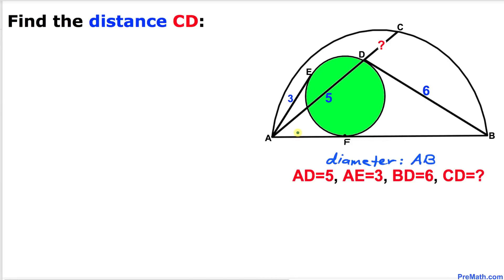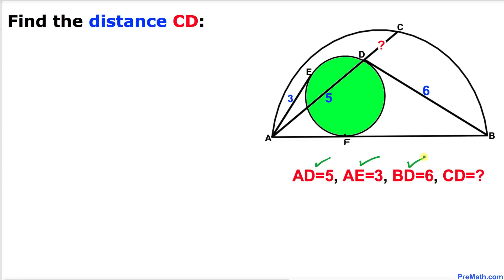Welcome to PreMath. In this video tutorial we have a semicircle with diameter AB, along with a green circle that is tangent to this semicircle at point F. The line segment AD is 5 units, line segment AE is 3 units, line segment BD is 6 units, and we are going to calculate the length CD.